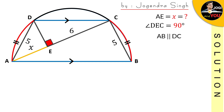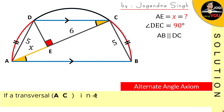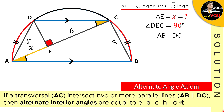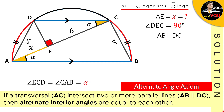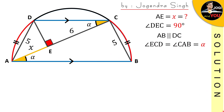So we have gathered our useful information. Now focus on point A and point C — what is the relation between these two angles? For their relation we have the alternate angle axiom, which says: if a transversal intersects two or more parallel lines, then alternate interior angles are equal to each other. Our parallel lines are these two blue ones, and the transversal is AC. Where a Z is formed, naturally the alternate interior angles are equal. We write them as equal and name them alpha.